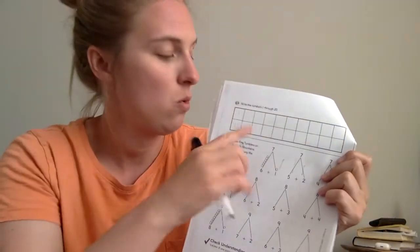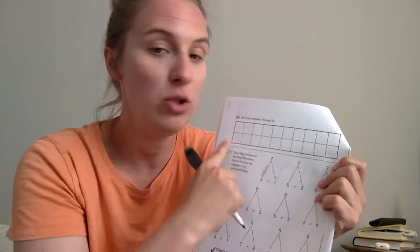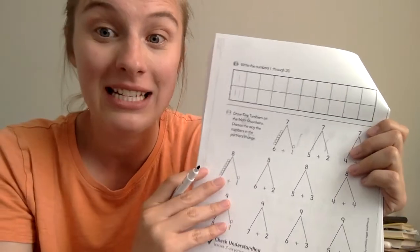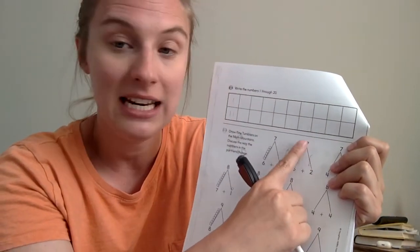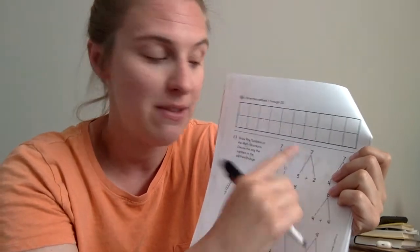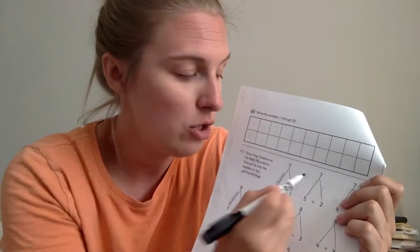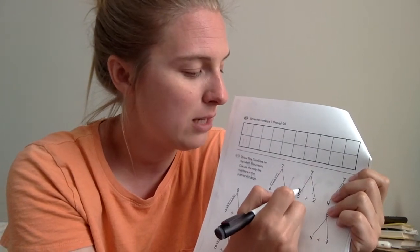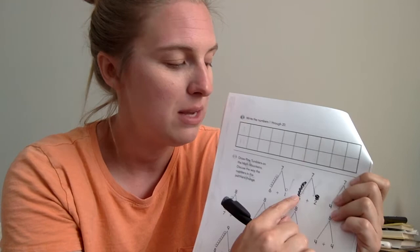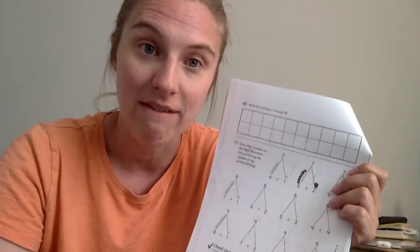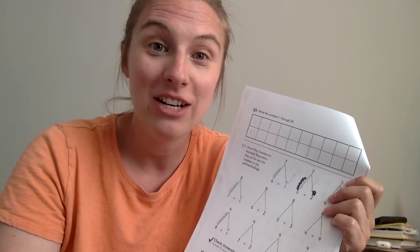Then on the back of that page, you are going to write numbers one through twenty. And then you're going to use the tiny tumblers. Now, it tells you this time how many tiny tumblers need to be on each side to equal the number at the top of the mountain. So make sure your circles are small. So this should be five on this side. One, two, three, four, five. And two on this side. One, two. Because five plus two equals seven. All right, kindergartners, keep working hard. It's almost Friday.